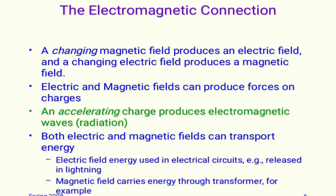Regarding electromagnetic conditions: the first point is that a changing magnetic field produces an electric field, and a changing electric field produces a magnetic field.